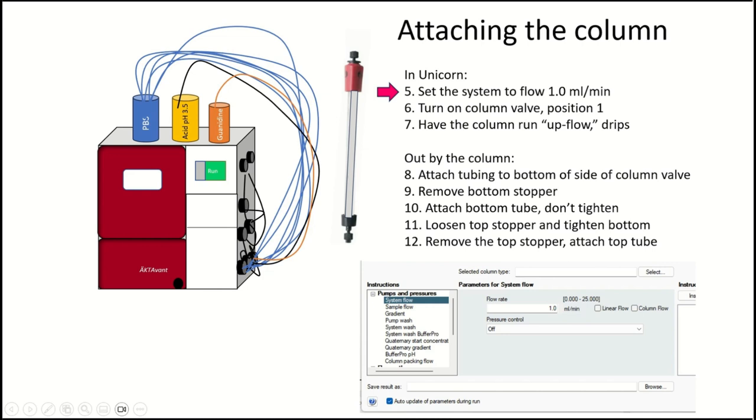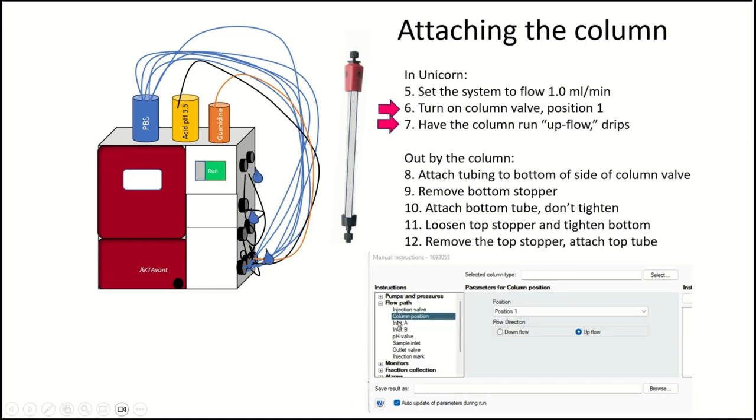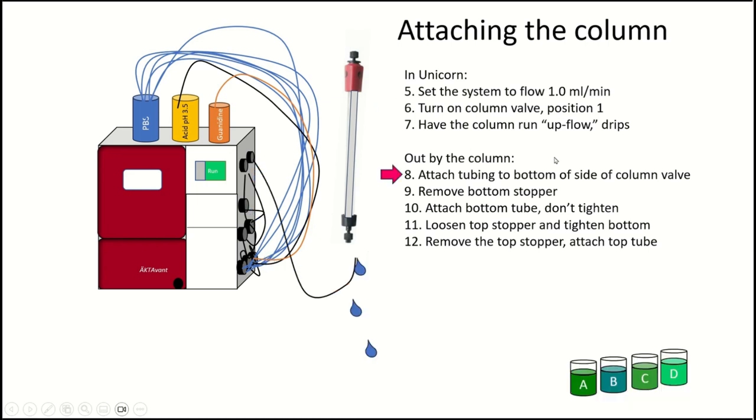Okay. So in order to attach the column, we are going to set the system up with a flow of one mil a minute and that's done right here. And then the next thing we're going to do is in unicorn, we're going to set the column position to position one. And then we're also going to set it for upflow right here. So that the system will start running up. Then what we're going to do, so now that it's running, we're going to get drips coming down off the side because there's not going to be any inlet tubing. Sorry. There's not going to be any tubing for the column at this point, right?